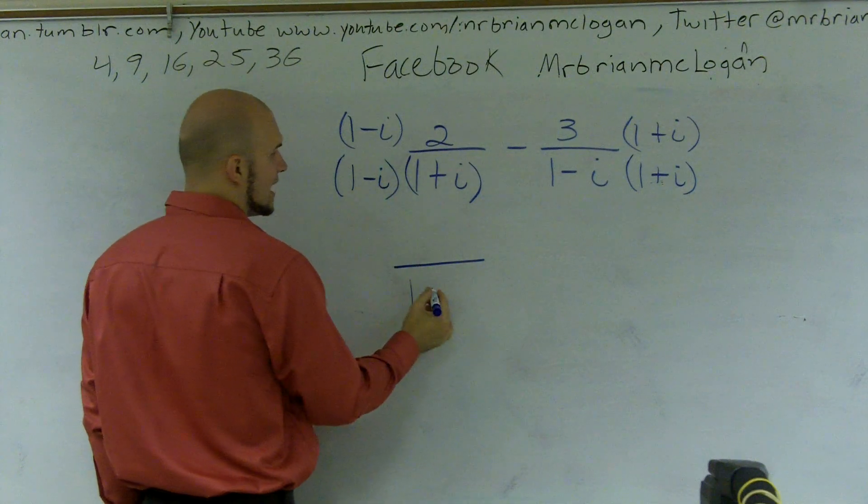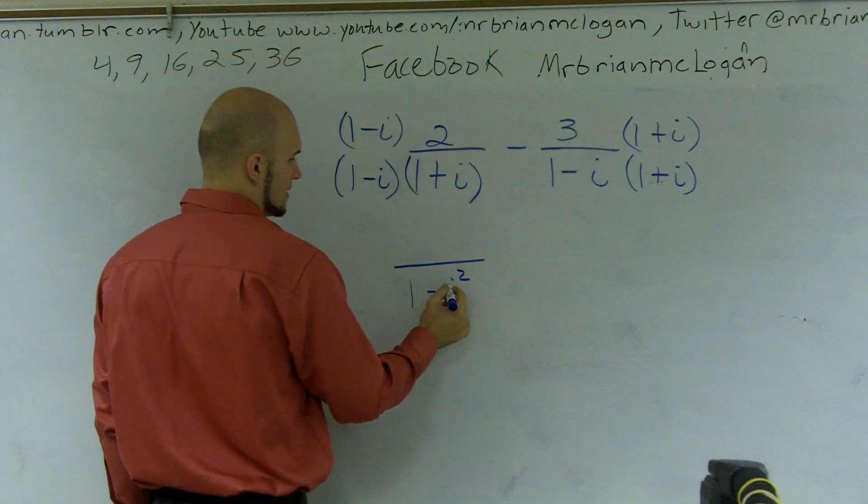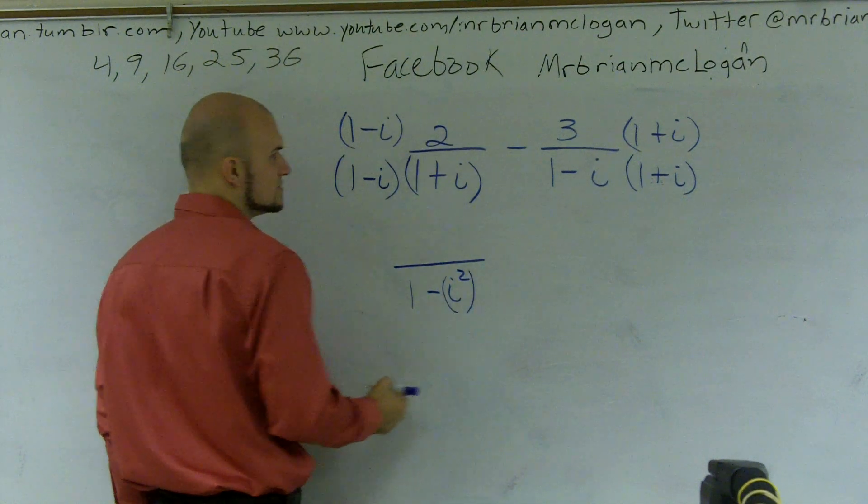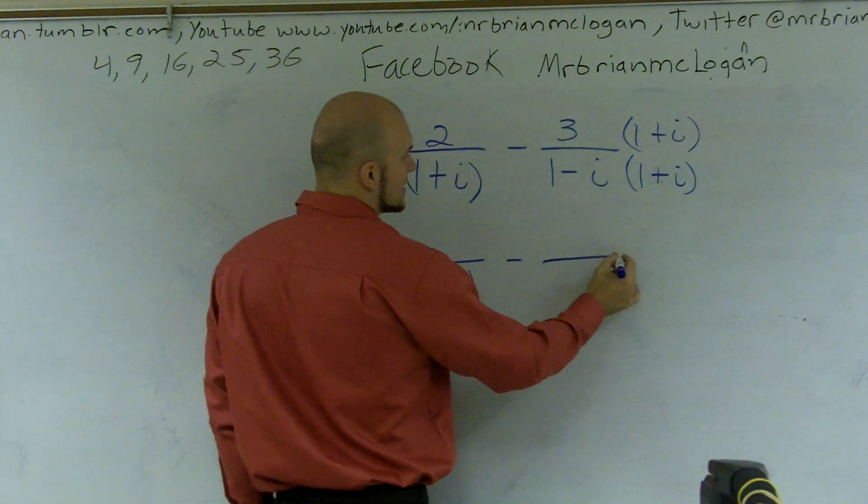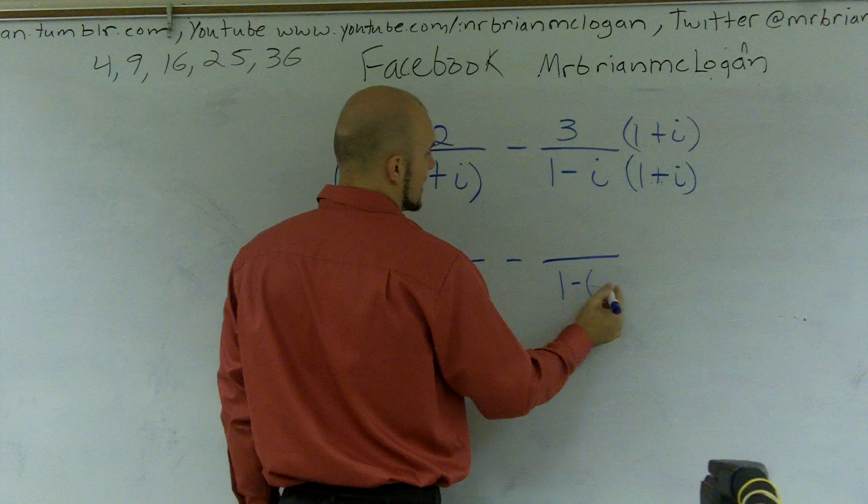Negative i times i is going to be a negative i squared. And I'll kind of put it in parentheses real quick. Minus, and then on this bottom, we're going to have the exact same thing, one minus i squared.